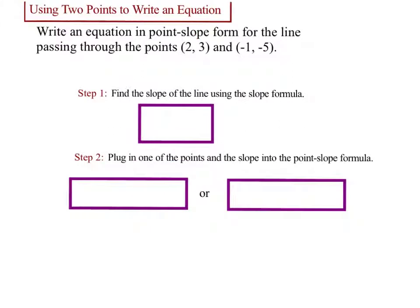All right. Next, we want to try to write the equation in point-slope form for a line that passes through these two points. So what we'll do is, first, we have to find the slope. So let's do the slope formula to find the slope. I set up my slope formula. And I'm going to do -5 minus 3 is -8. And I'll do -1 minus 2 is -3. So the two negatives cancel and my slope is 8 over 3.